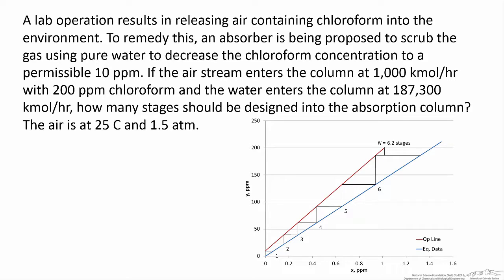The first step in the Kremser analysis is to convert the equilibrium information into a standardized linear format. If we look at the equilibrium line and wish to express it in the form y equals mx plus b, or a standard line format, we just need to see how we can convert what we know about the equilibrium for this system into that format. In a dilute absorption system such as this, we often represent the equilibrium information using Henry's law, so we try to make Henry's law look like y equals mx plus b.